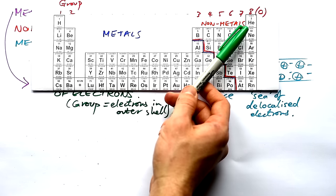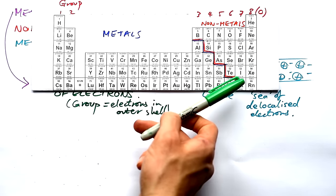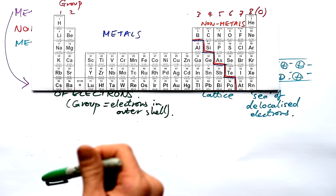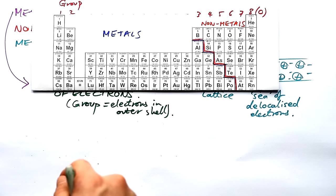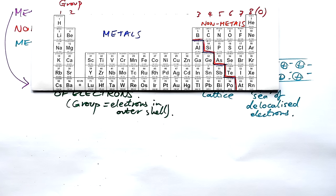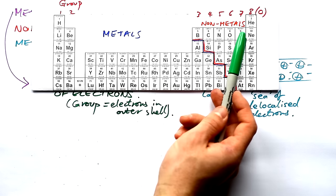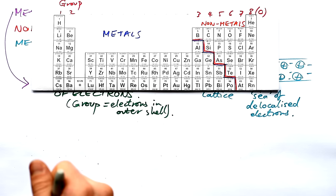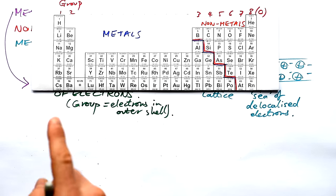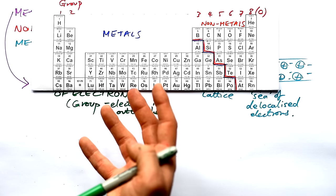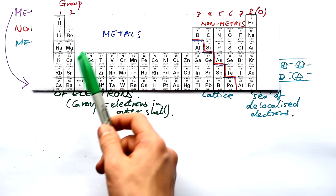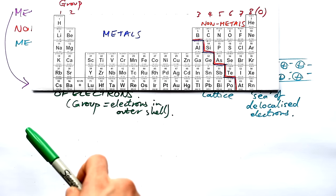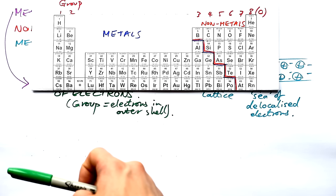If we look at group eight — helium, neon, argon, krypton, xenon, and radon — these are what we call the noble gases. They are very, very unreactive, basically because they already have a full outer shell of eight electrons. They don't want any more electrons, they don't want to give any away — they are happy, they are noble. But for the rest of the elements to the left, none of them have a full outer shell.